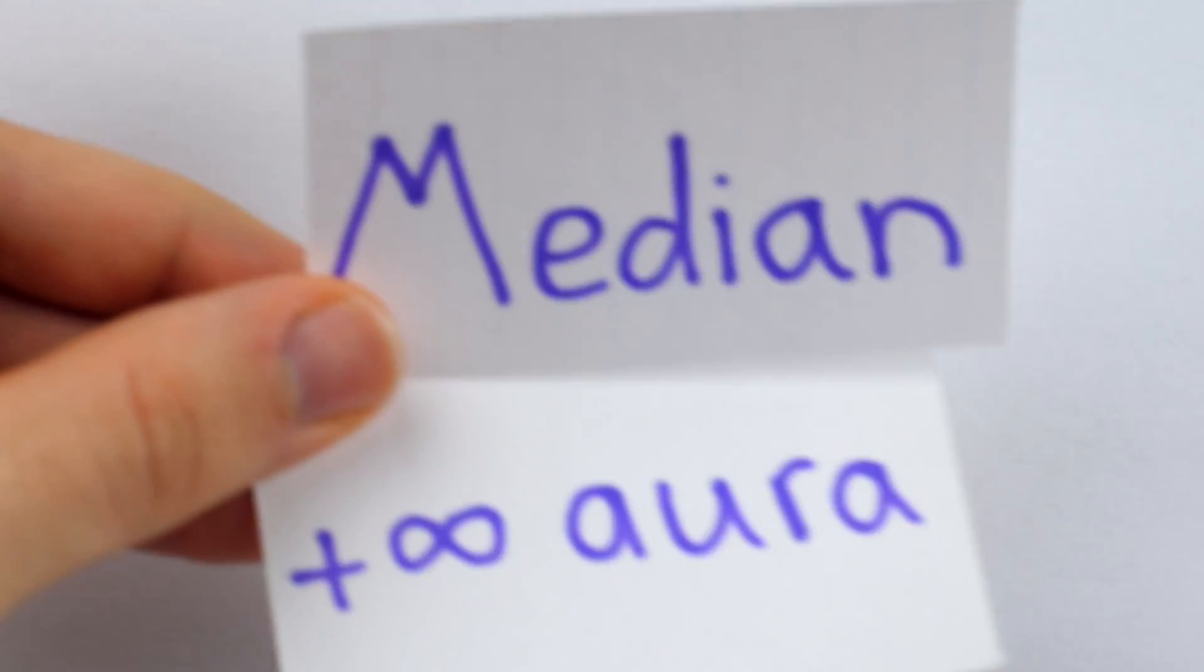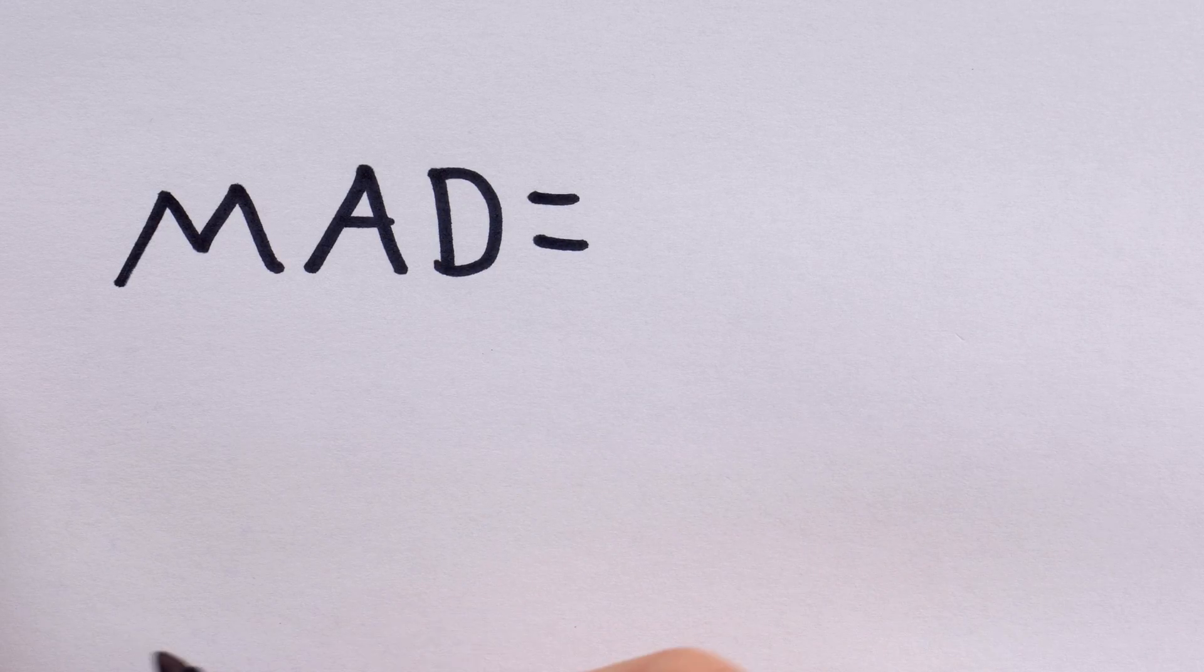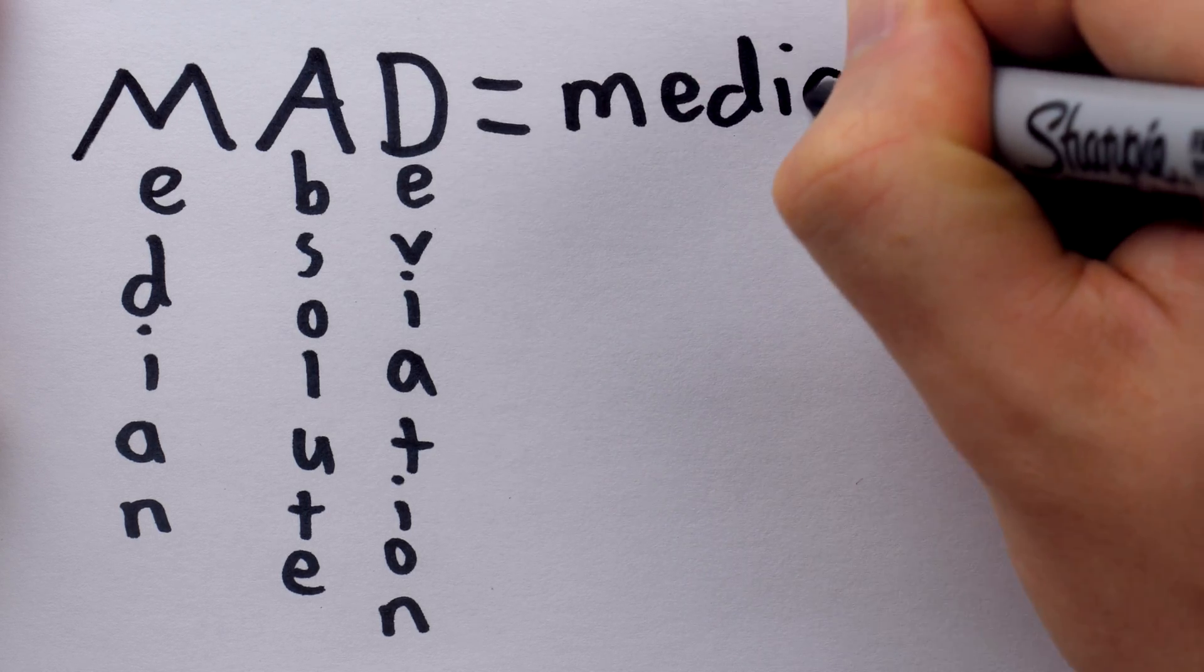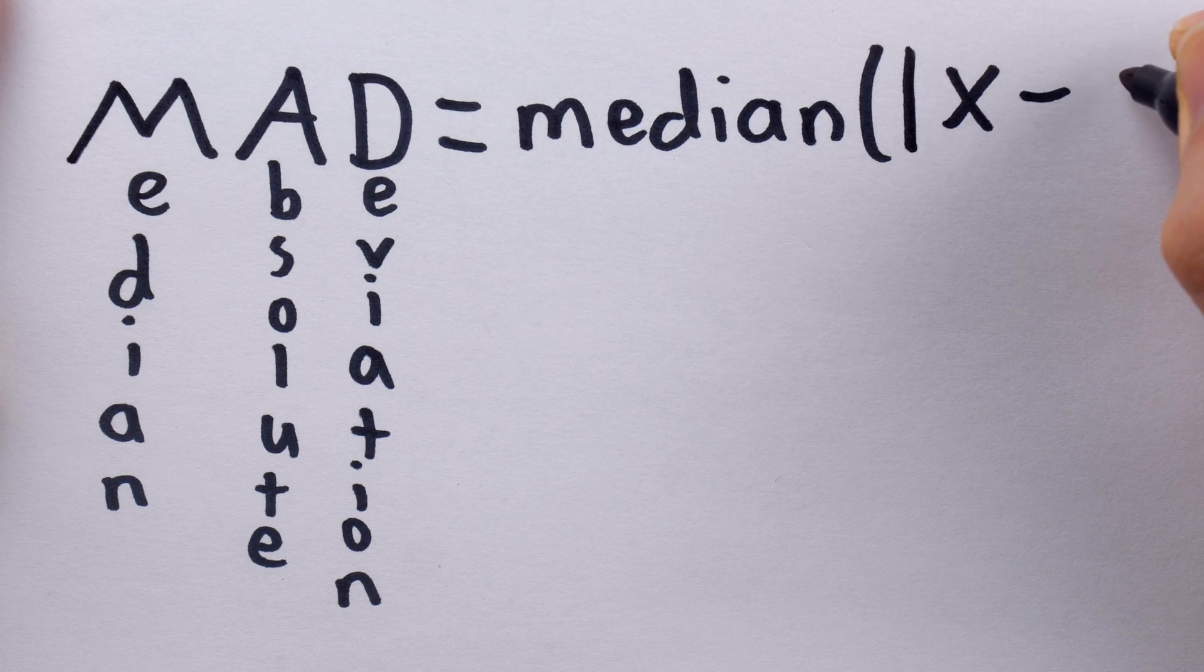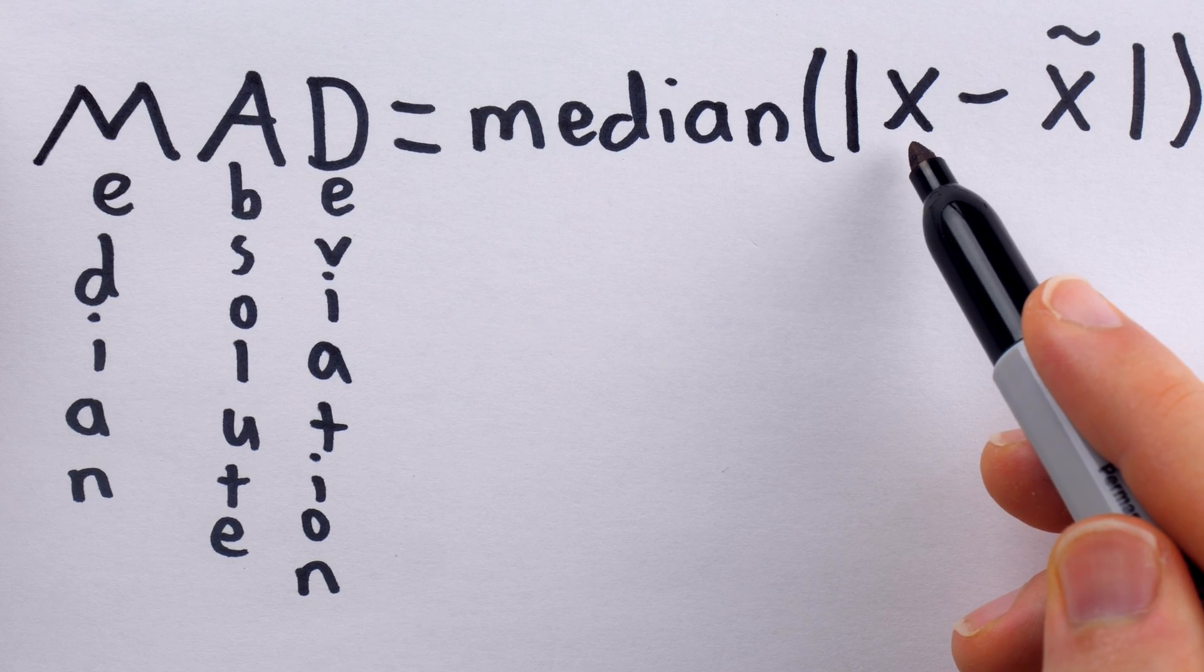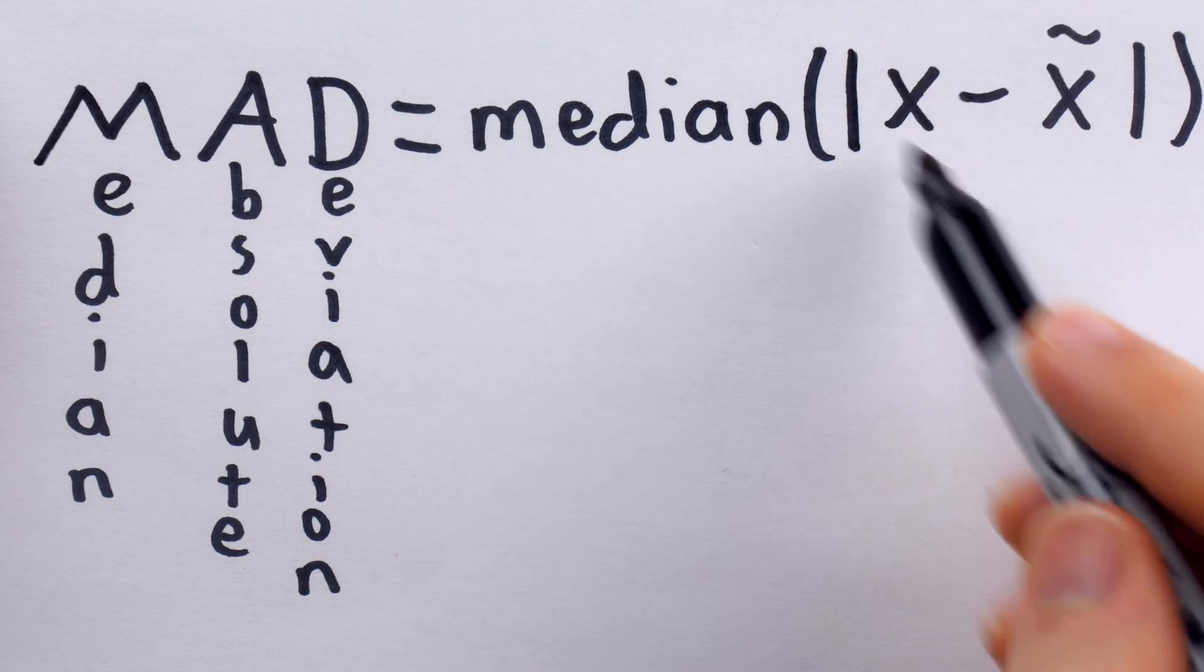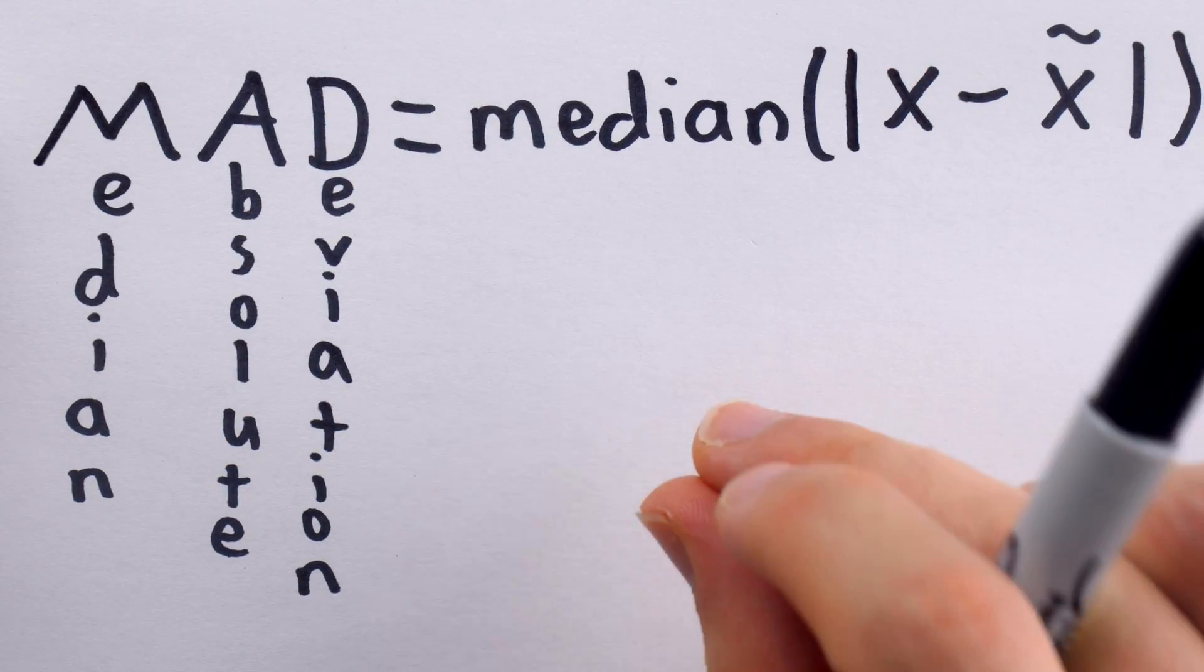But, of course, that's where our robust infinite aura friend, the median, comes in. Just like there are robust measures of center, like the median, there are robust measures of spread based on the median. One robust measure of spread is the MAD. It's actually an acronym. It stands for Median Absolute Deviation. The MAD is itself the median of a set of numbers. In particular, it's the median of the absolute values of the data points minus the median. We'll use this x squiggly on top to represent the median. So, if we take each data point, subtract the median, and then take the absolute value of that, do that with every data point, the median of all of those absolute values is the median absolute deviation, a measure of spread that is resistant to outliers.